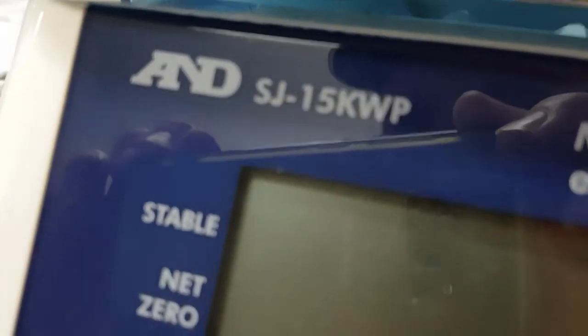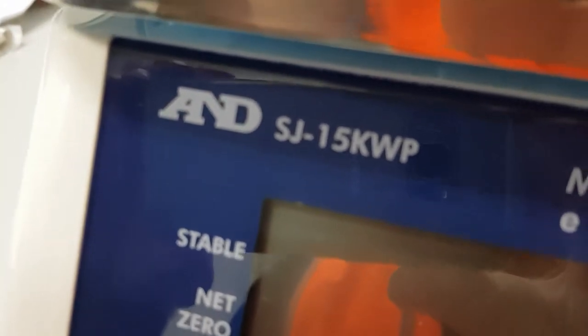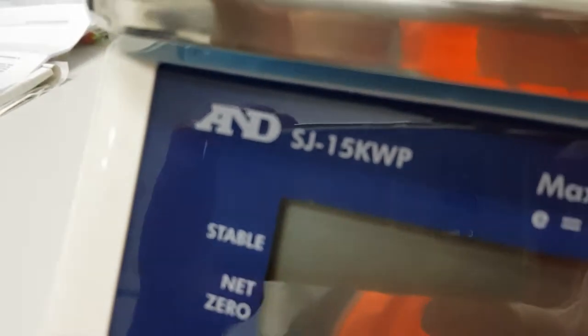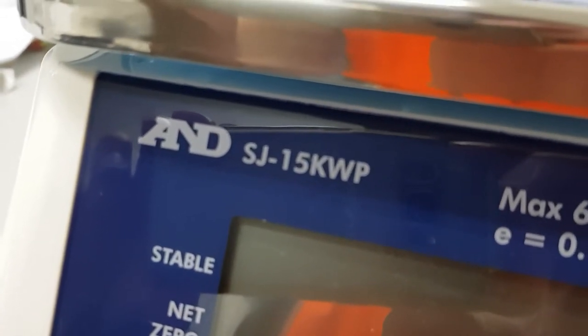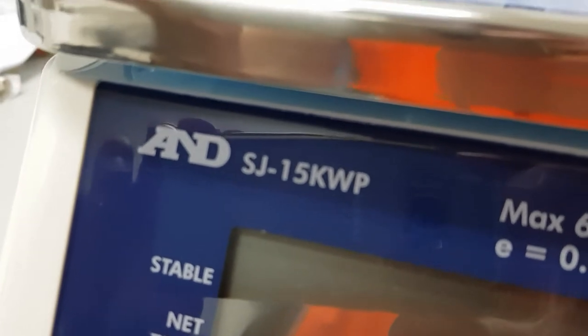This is a short handy hints video showing how to update the target settings on A&D's popular waterproof traffic light scale, the SJWP. This model was updated about 18 months ago. The time of this video is February 2018.